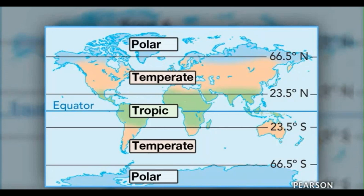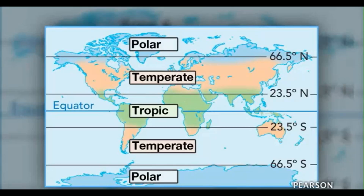Another climate zone related to latitude is the temperate zone. It is the area between 23.5 degrees and 66.5 degrees on both the north and south hemispheres of the earth. The temperate climate tends to be warmer in the summer and colder in the winter, based on the time of year sunlight hits most directly. The United States is in the temperate zone. Did you also know that when it is summer in the United States, it is winter in the southern hemisphere temperate zone?